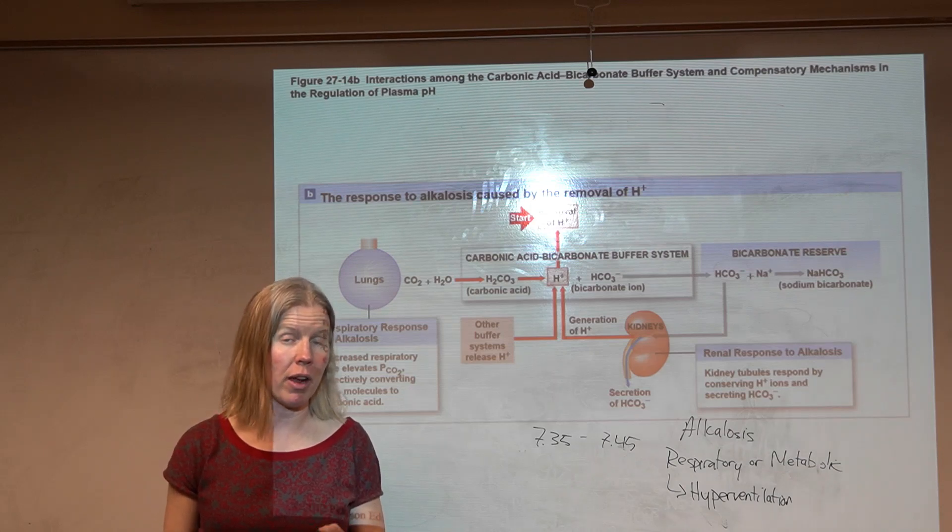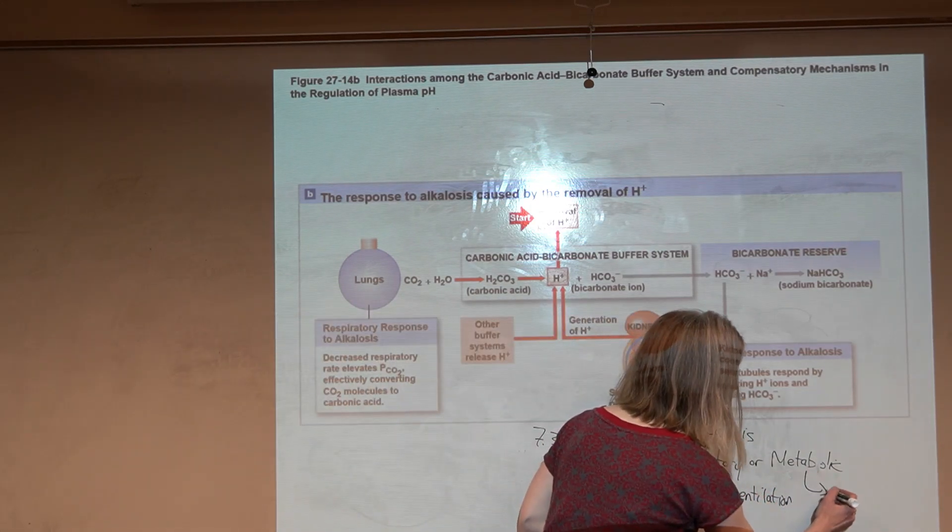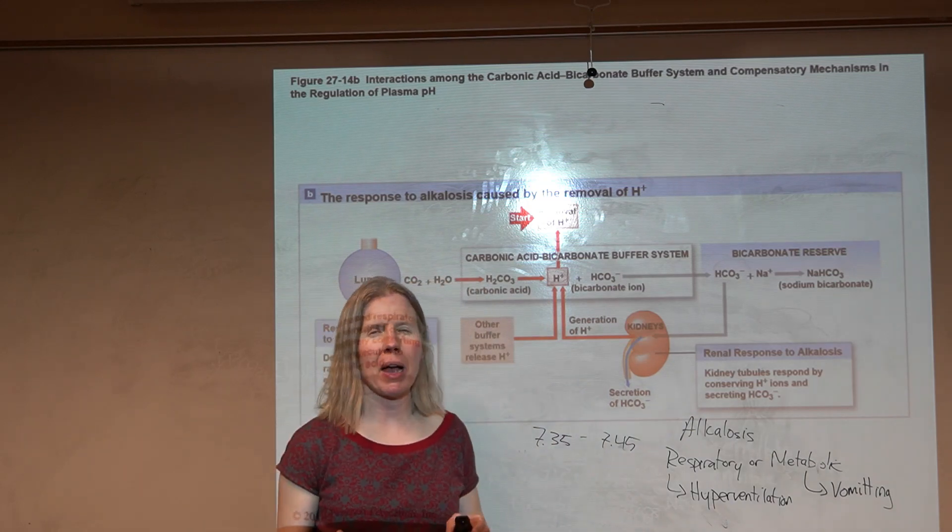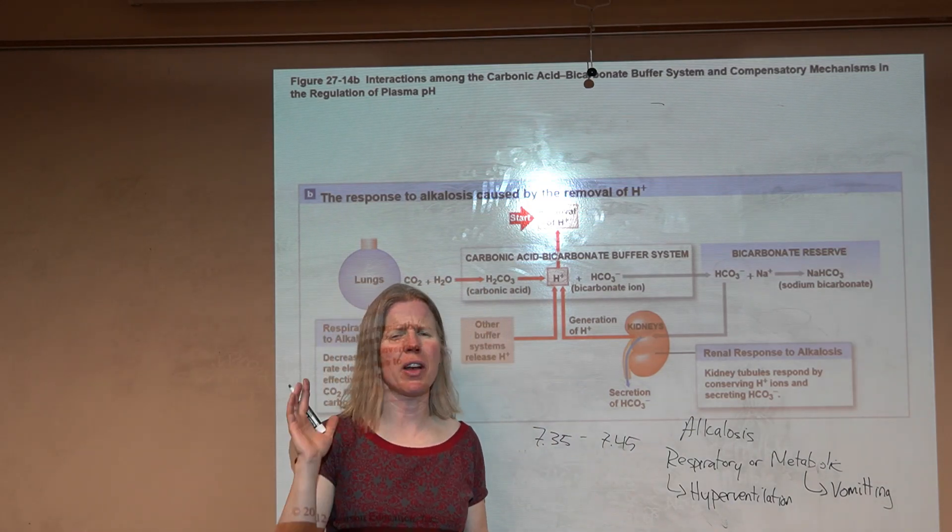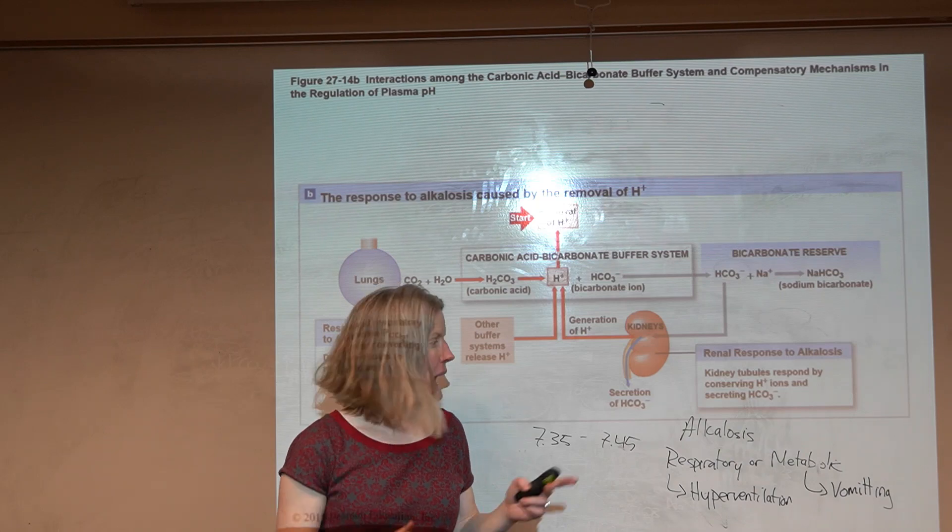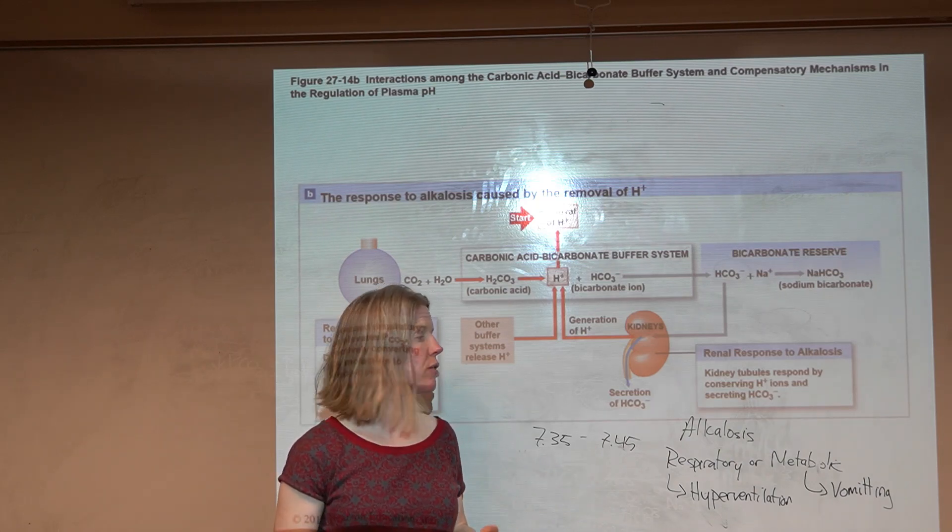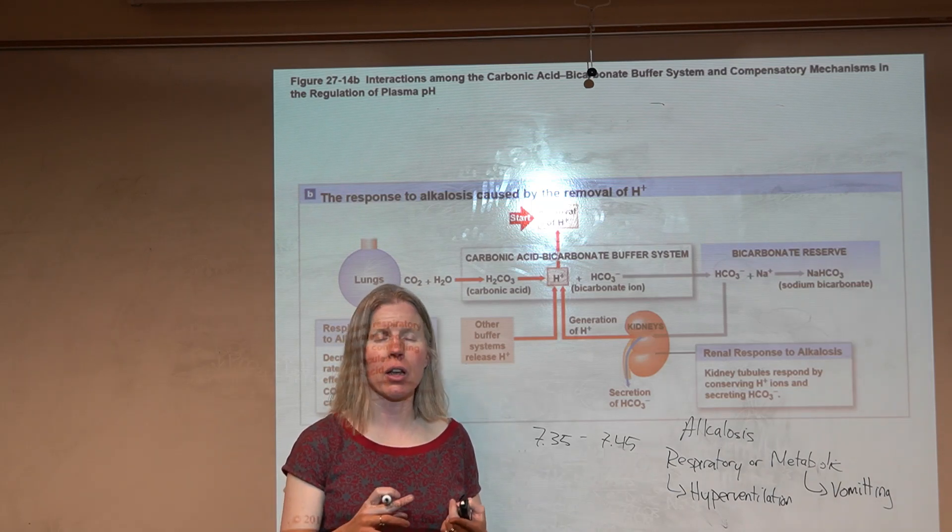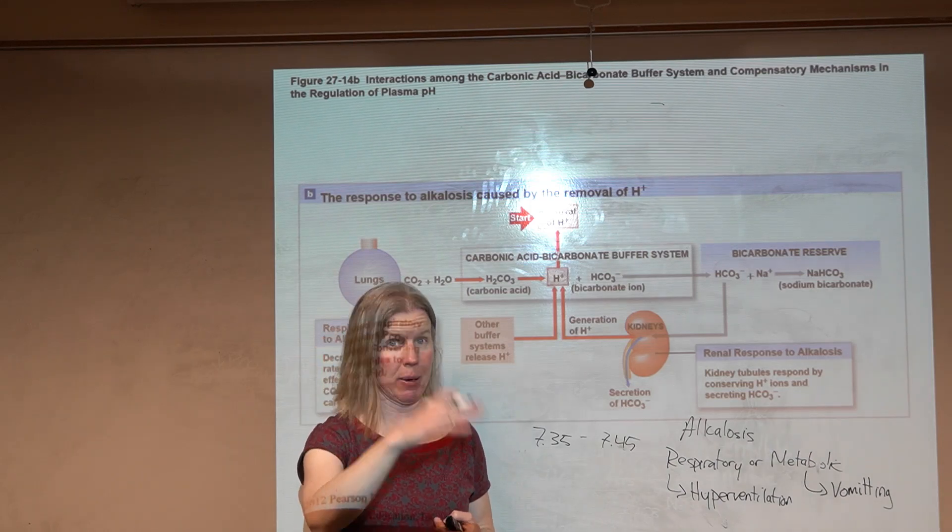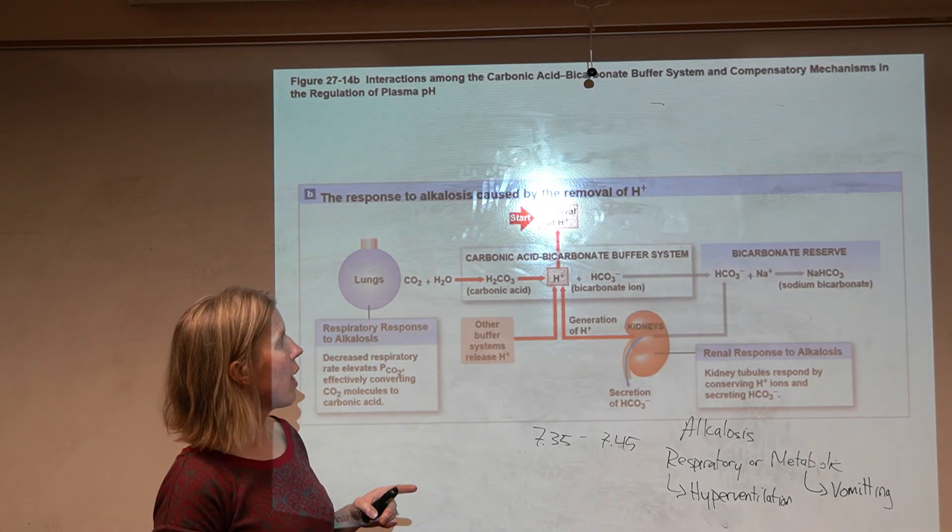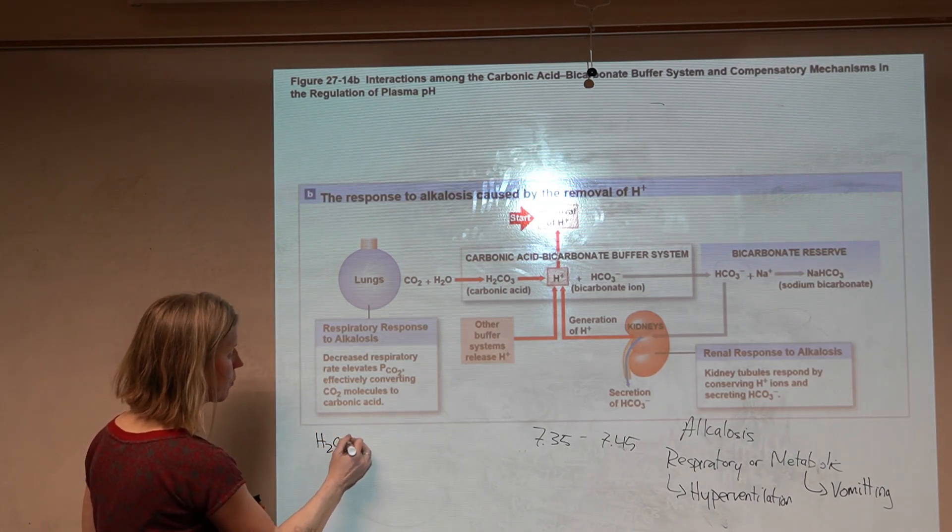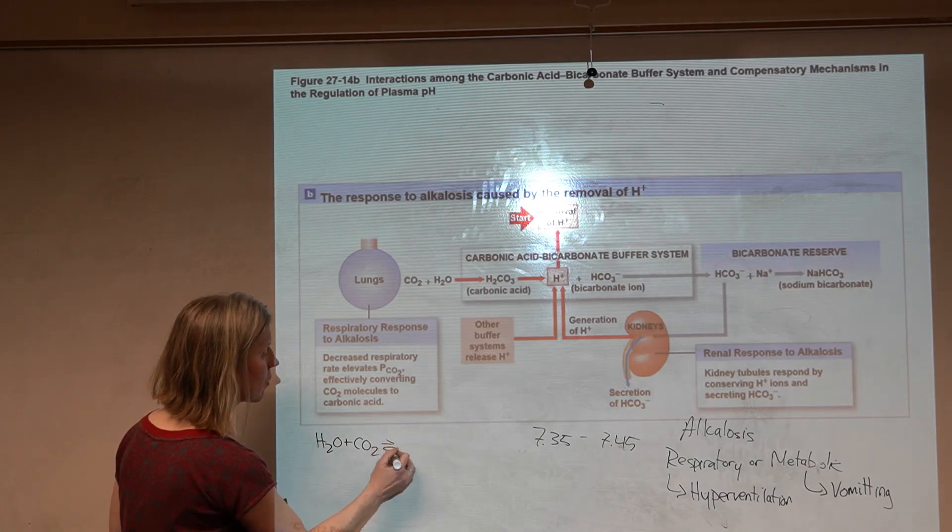Metabolic alkalosis - I think a good example there of where your blood pH might climb is through excessive vomiting. If you think back to the last time you were super sick with that gut bug, you can puke five, six, I don't know how many times without going into metabolic alkalosis. So this is really severe. This could be something like alcohol poisoning, hyperemesis gravidarum - morning sickness to the extreme - vomiting enough that you could actually change that blood pH.